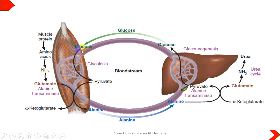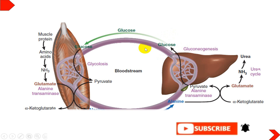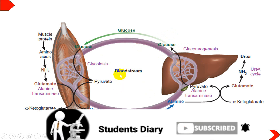That glucose molecule is recycled back to the muscles and reutilized for energy production through glycolysis. The glucose-alanine cycle serves two purposes: first, since muscle lacks the enzymes to process ammonia, this cycle transfers it to the liver where it is converted into urea; second, the pyruvate accumulated in the muscle is converted into glucose in the liver. This is the importance of the glucose-alanine cycle.